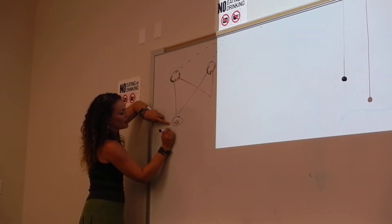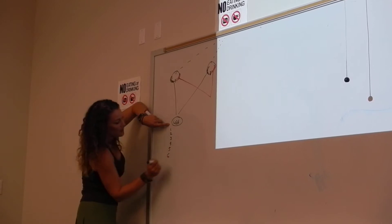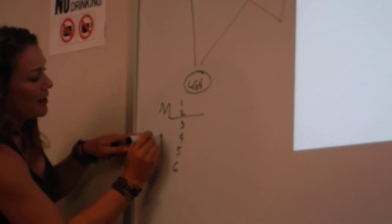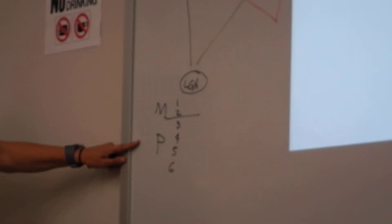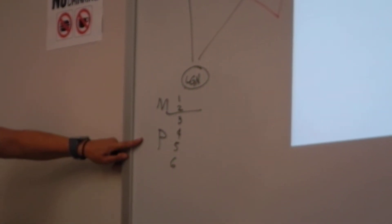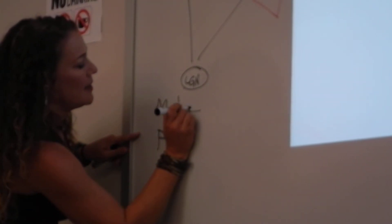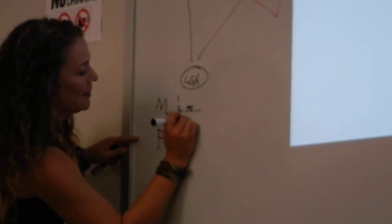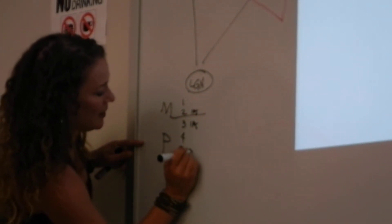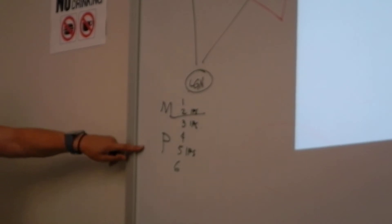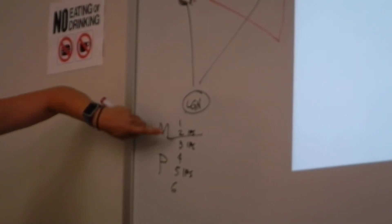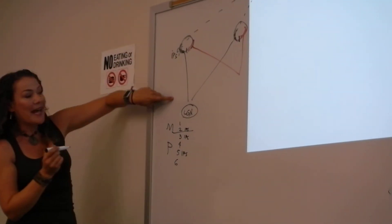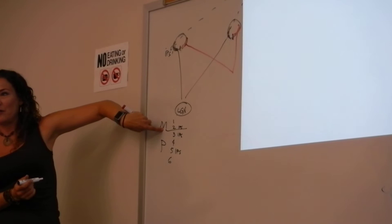Within the lateral geniculate nucleus, we've got six layers. The first two are magnocellular, the next two are parvocellular. The layers alternate ipsilateral and contralateral — ipsi, contra, ipsi, contra. So this information is going to be processed ipsilaterally — information from the left eye in the left lateral geniculate nucleus.